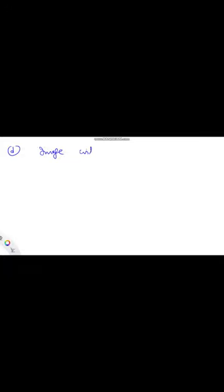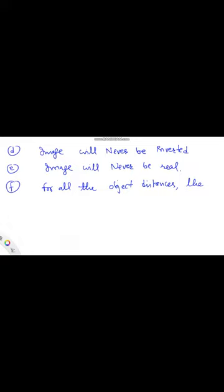In the fourth part of the problem, we have to find the range of the object distance for which the image will be inverted. The image formed by a diverging lens will never be inverted — the image will always be virtual.